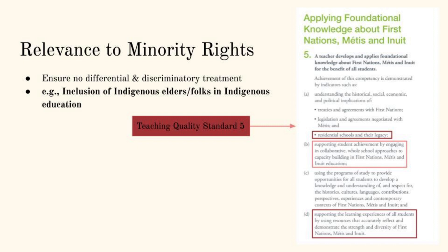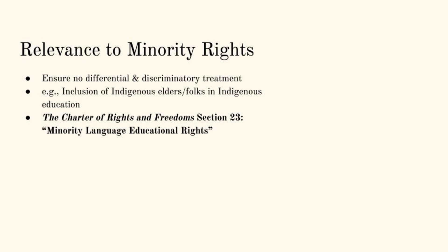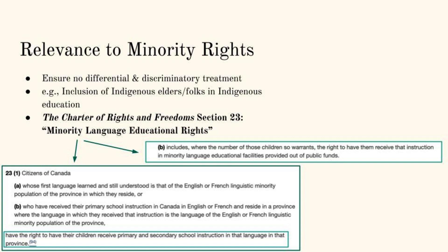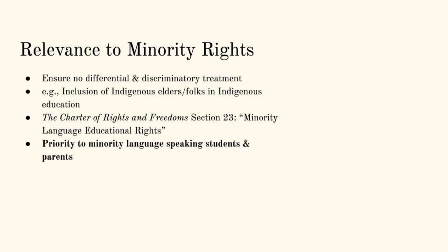Section 23 of the Charter of Rights and Freedoms entails the specifics of minority language educational rights in Canada. It specifies that English and French linguistic minorities of the province will receive primary and secondary school education in their specific language, and that, with enough students needing education in their minority language, an educational facility will be provided out of public funds. Section 23 of the Charter is the leading document used in this case to lead to the appeal of the judge's former ruling. Because minority language educational rights are part of the Charter, it is relevant to the educational context, and the specifics of Section 23 should be known by all members of the educational community.